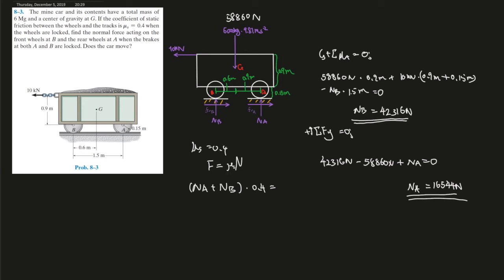Anyway, if you put nA and nB times 0.4, in the end, it should be 23,544 newtons, rounded to three significant figures, it should be 23.5 kilonewtons, right? And let's compare 23.5. This is way bigger than 10 kilonewtons, right?